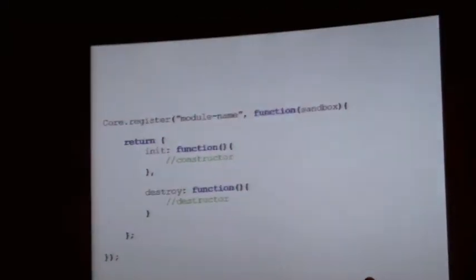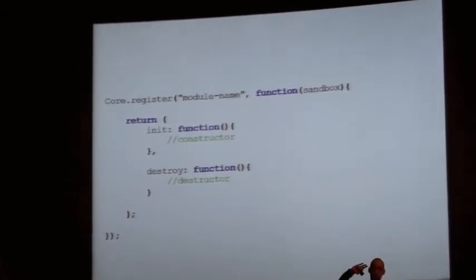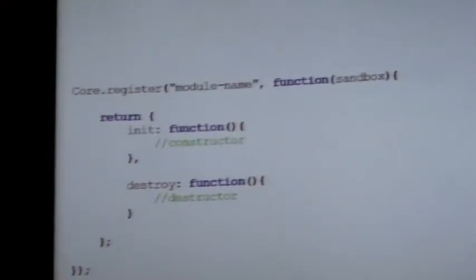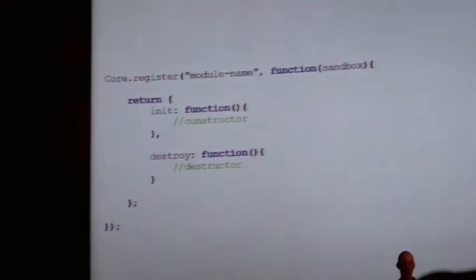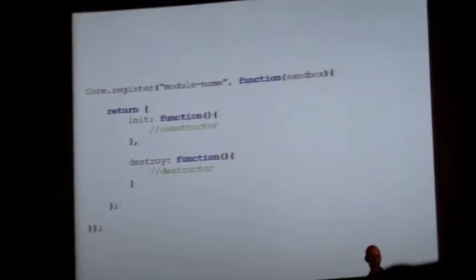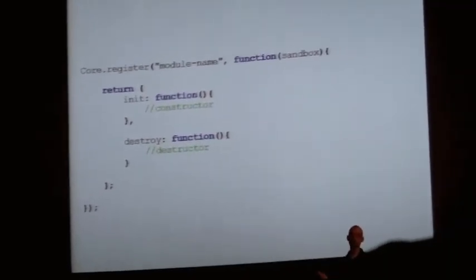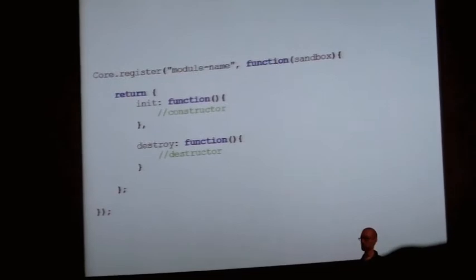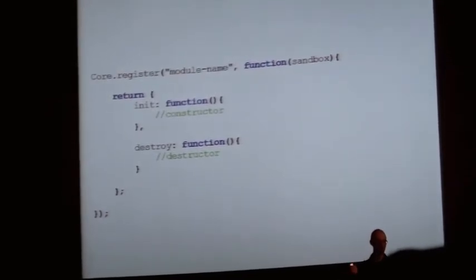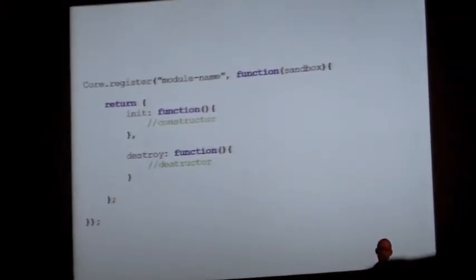Here's some really simple code. You might register a module by giving it a module name, a function that executes when it's ready, and pass in a sandbox object that is basically the interface to the rest of the world. I have it returning an object that has an init method and a destroy method for setting up and tearing down that module.